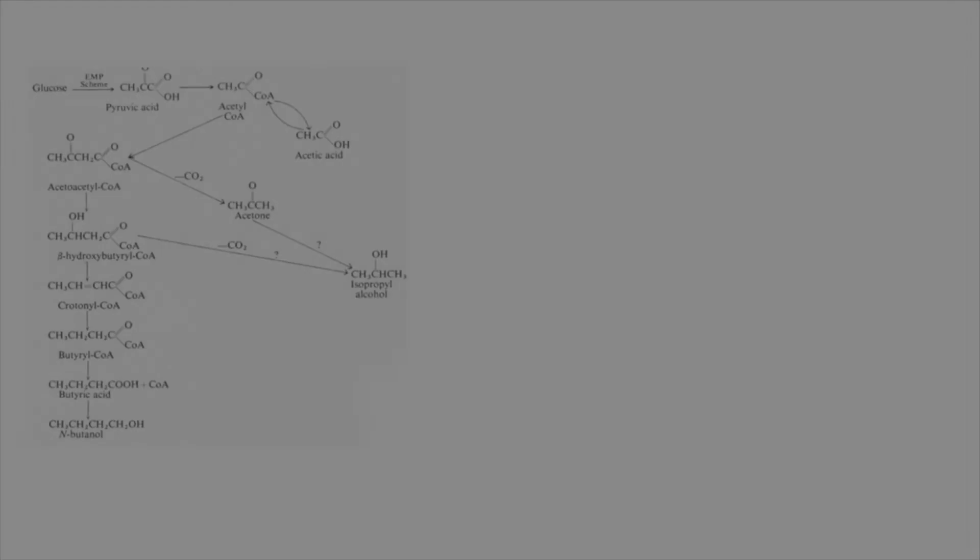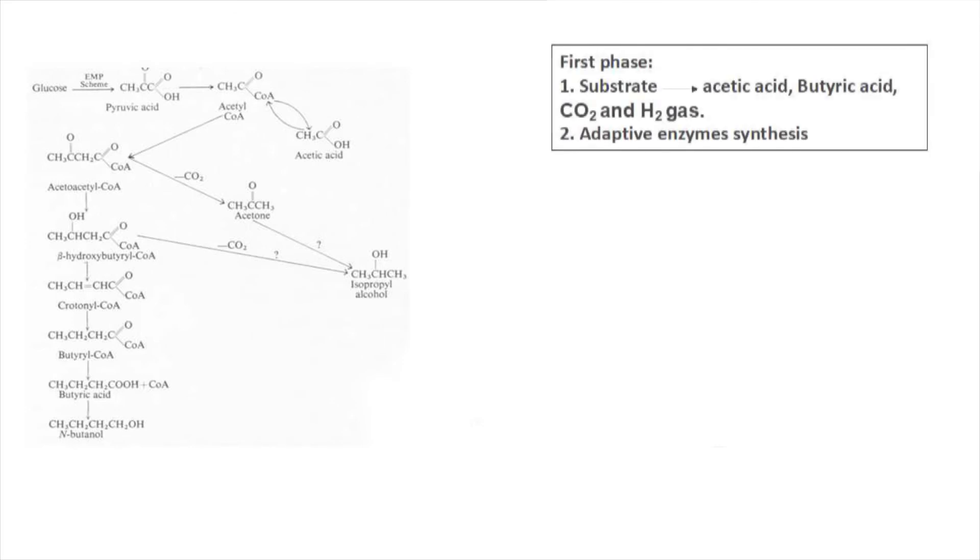This fermentation process happens in three phases. In first phase, the bacteria grow rapidly by converting sugars to acetic acid and butyric acid, releasing carbon dioxide and hydrogen gases. As a result of acid production, the pH decreases. At the end of the first phase, the bacteria start producing adaptive enzymes.